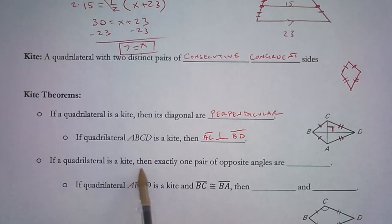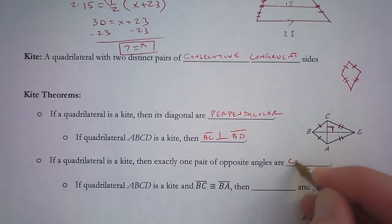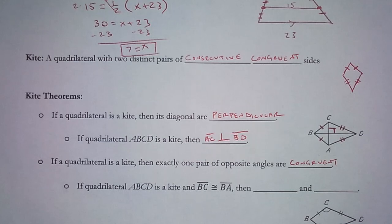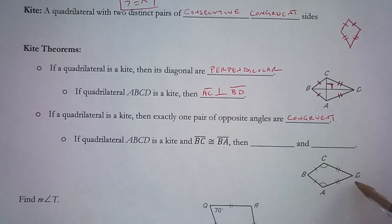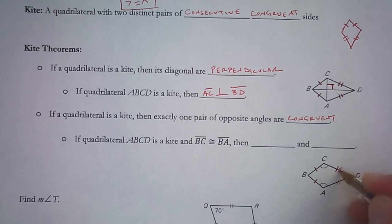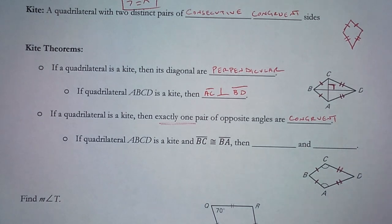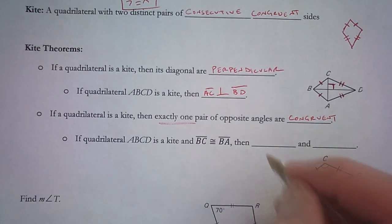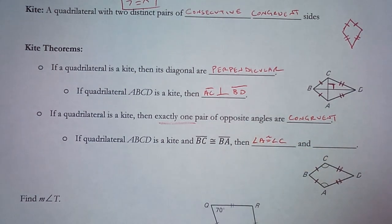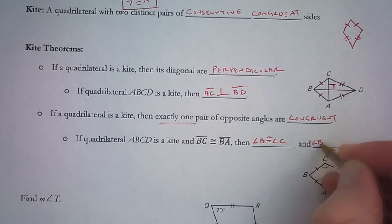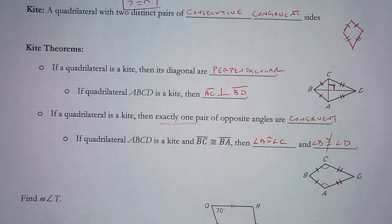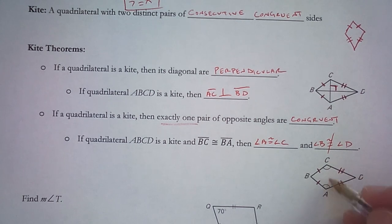Also, if a quadrilateral is a kite, then exactly one pair of opposite angles are congruent. If ABCD is a kite — one pair of congruent sides here and another pair here — then there is exactly one pair of opposite angles that is congruent. One pair will be congruent and the other cannot be. So angle A is congruent to angle C, but angle B is definitely not congruent to angle D.